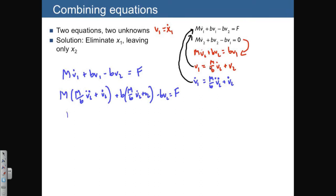Now let's try to collect some terms: m squared over b v2 double dot plus mv2 dot plus there's another mv2 dot plus bv2 minus bv2 is equal to f. These two terms here are going to cancel each other and we can combine the v2 dots. So we end up with an equation m squared over b v2 double dot plus 2m v2 dot is equal to f.